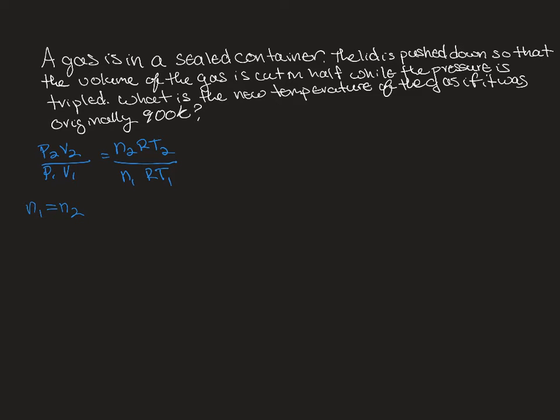I'm then told that the lid is pushed down so the volume is cut in half. So V2 is one half of V1. And then I'm told that the pressure is tripled. So P2 is 3 times P1, so tripled means 3.